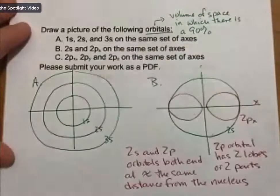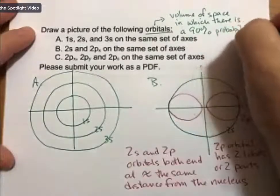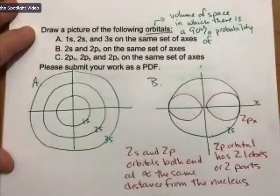A 90% probability of finding the electron.